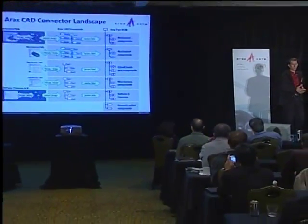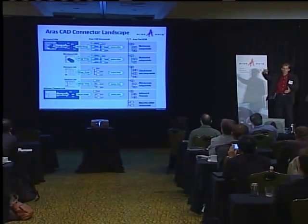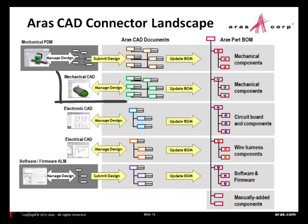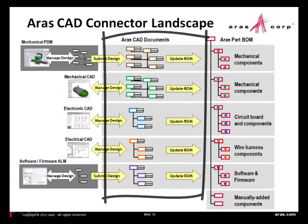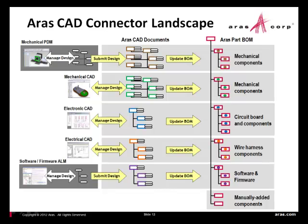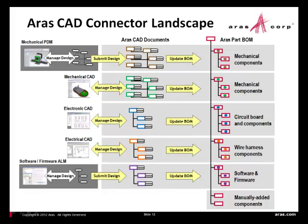This is what I would call our AERIS CAD connector landscape. The swim lanes represent different disciplines. Take mechanical CAD — you're managing your design, the middle column is AERIS CAD documents, and in every case with a CAD integration you're managing your CAD documents and your check-in/check-out process, then pushing data into the BOM. That last column represents the unified AERIS BOM tracking data from different disciplines: mechanical, circuit boards, wire harnesses, software and firmware, and manually added components — encompassing most of what you'll be managing in a BOM.